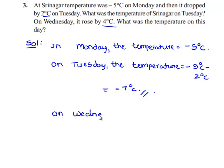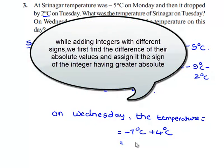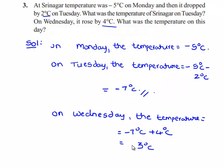On Wednesday, the temperature is the temperature on Tuesday, that is minus 7 degrees Celsius, plus 4 degrees Celsius. When finding the temperature on Wednesday, we find the difference between their numerical values regardless of their signs, and then give the sign of the integer with the greater value. Therefore, the difference between 7 and 4 is 3 degrees Celsius. Among 7 and 4, the greater value is 7 and its sign is negative. Therefore, we give the negative sign to 3 degrees Celsius, and hence the answer becomes minus 3 degrees Celsius. Therefore, the temperature of Srinagar on Wednesday is minus 3 degrees Celsius.